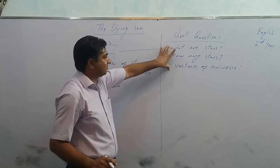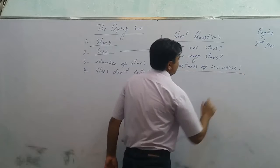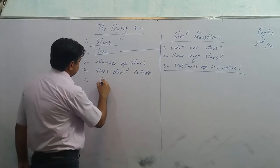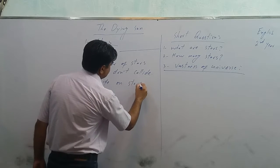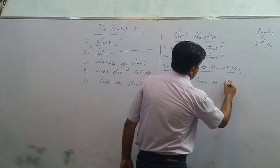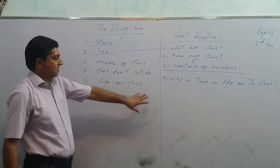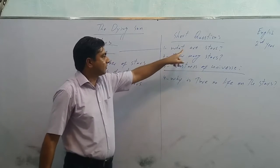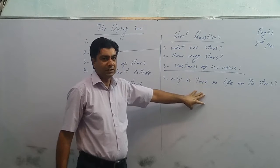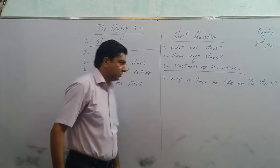There can be one question covering all this information as well: how big is the universe? Next is life on stars. The question can be: why is there no life on these stars? Stars are big, burning balls of fire. They are far too hot for life to survive on them. All liquid would be melted there, so there is no possibility of life on stars.